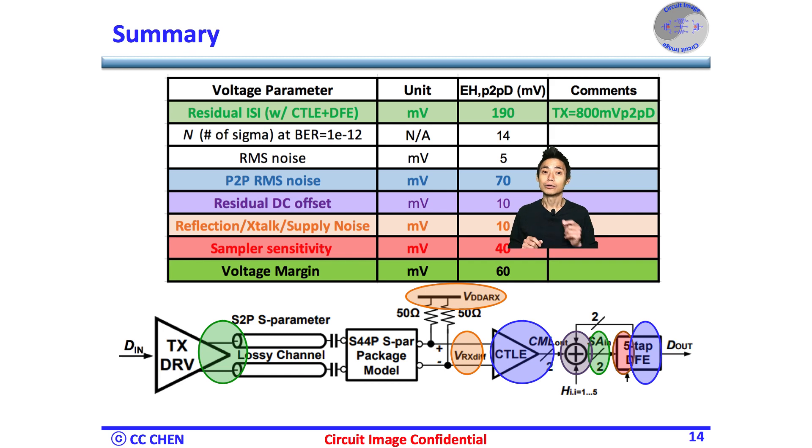Fourth, the SI or PI from the reflection, crosstalk, or supply noise would be another 10 mV. Lastly, the sampler sensitivity could be 40 mV according to the required timing and the clock-to-Q delay at the target data rate. Therefore, the overall voltage margin of the eye height in the link budget will be 60 mV from the simple math.